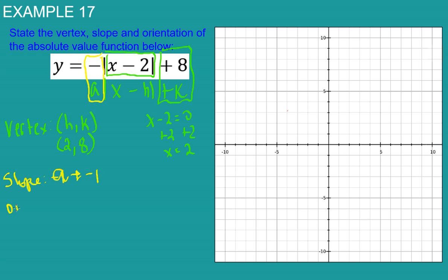And we now know that because it is negative, the orientation will make the graph open down. So, and that's all we needed to do, state the vertex, slope, and orientation.